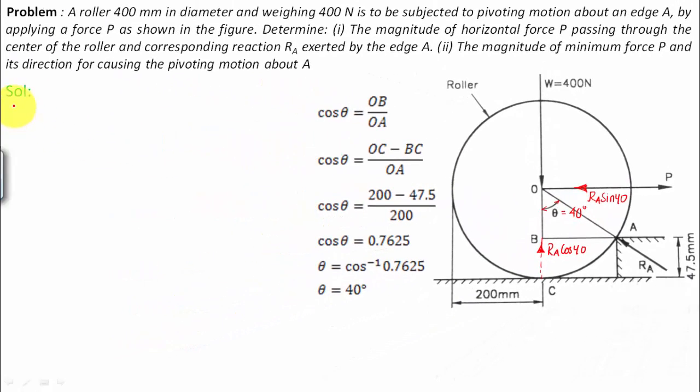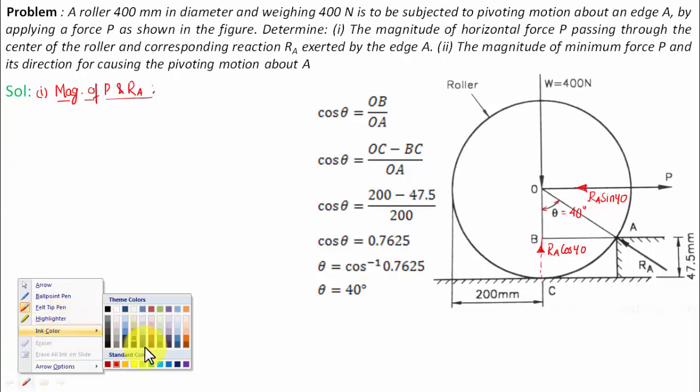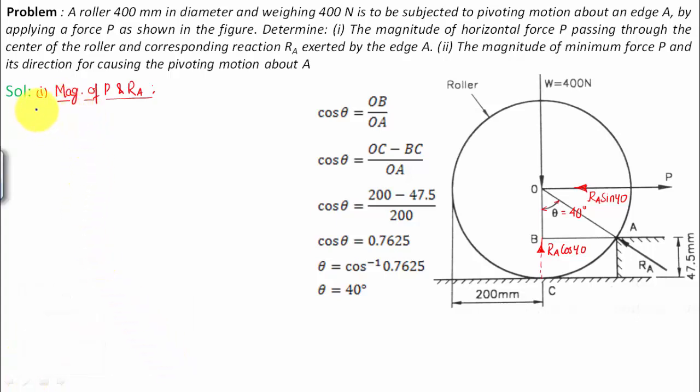Now in the first part we have to find the magnitude of P and RA. Let us try to solve this. I'm going to be using a blue color now. I'm gonna be using this equation: summation of all the forces in y-direction is equal to zero.